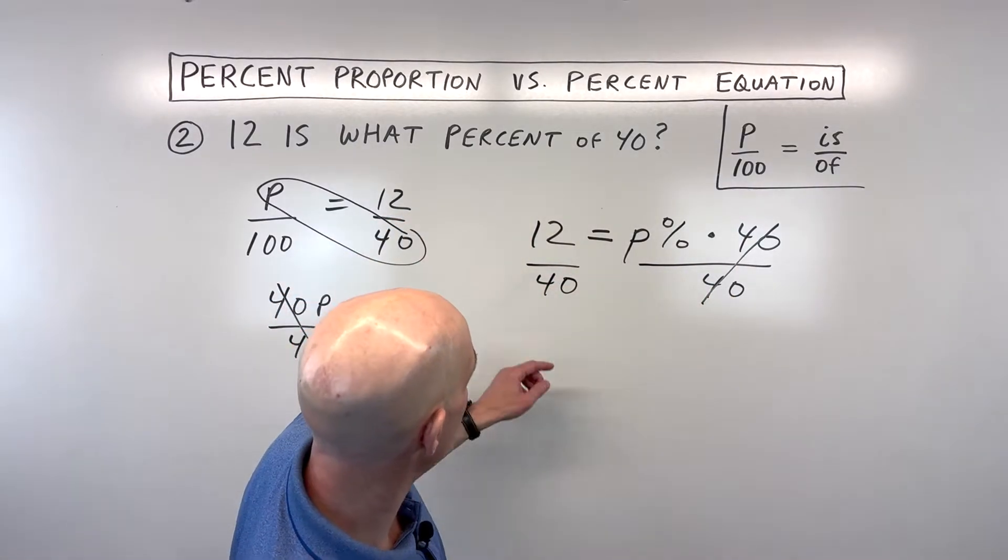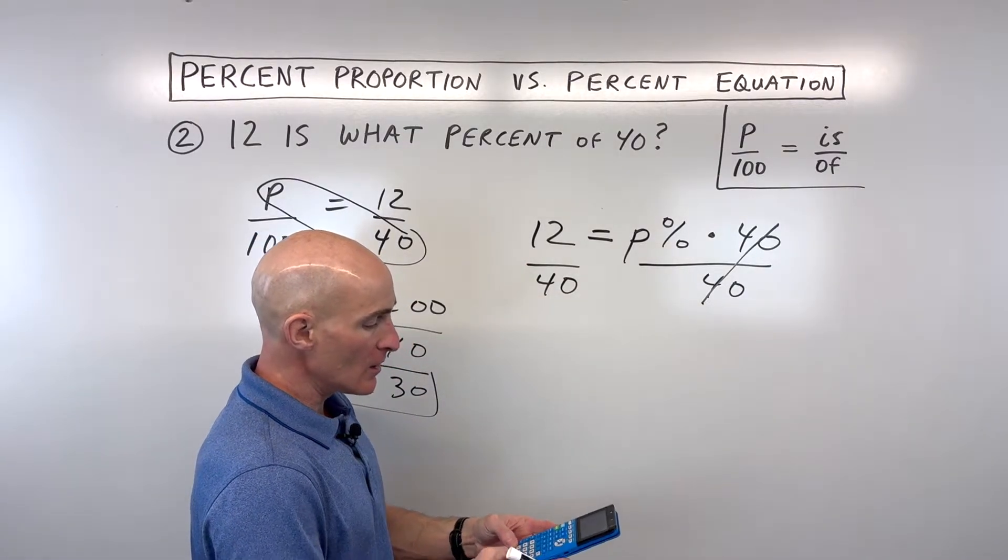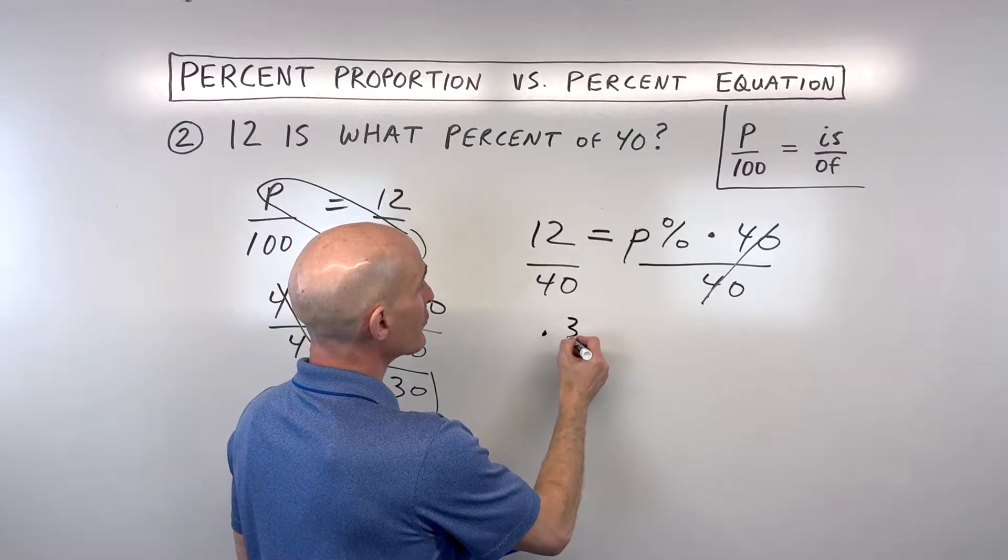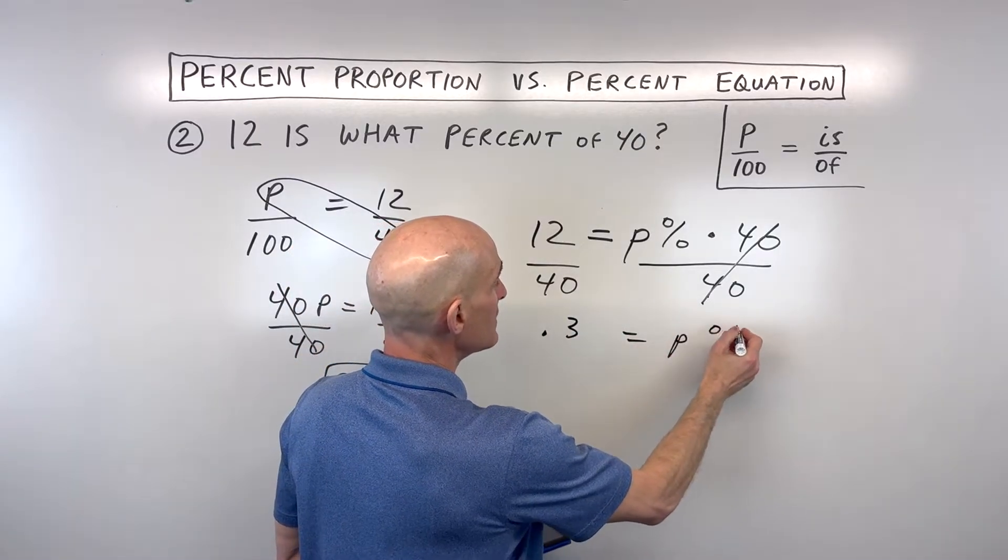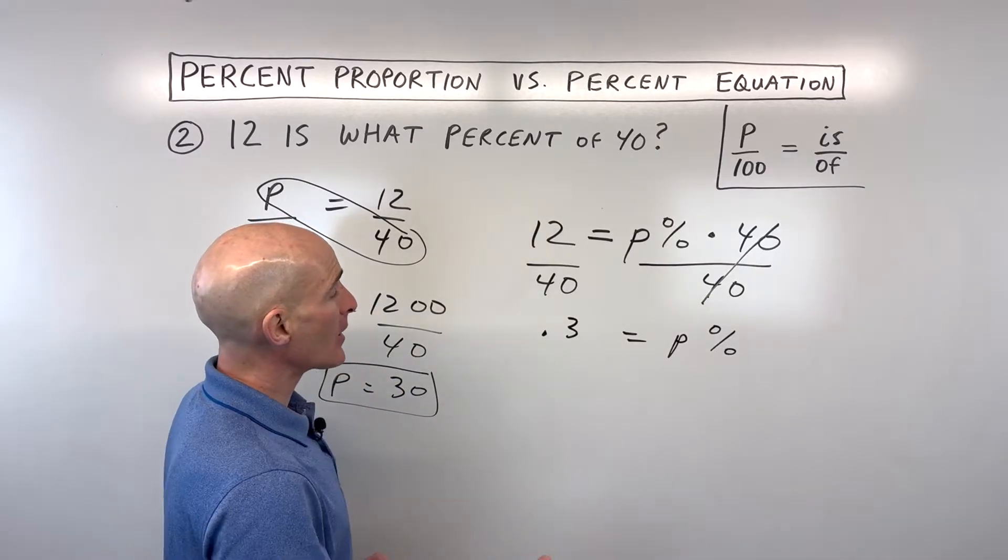Dividing both sides by 40. I'm going to go to the calculator on this one. When you see that fraction bar, that means divided by. So 12 divided by 40, which comes out to 0.3 equals p percent. Now this is a decimal, we want to convert it to a percentage. How do we do that?